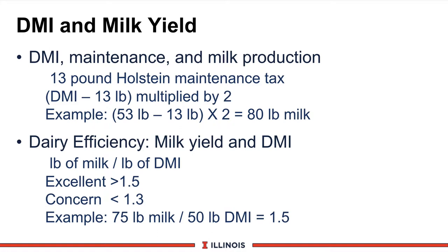If your cows are testing higher than 3.5% butterfat, a nice thumb rule is to add one pound more milk for every tenth of a pound of milk fat above 3.5. So in this example, if the group of cows were averaging 3.8 butterfat, instead of using 75 pounds, I would use 78 and then do the math.